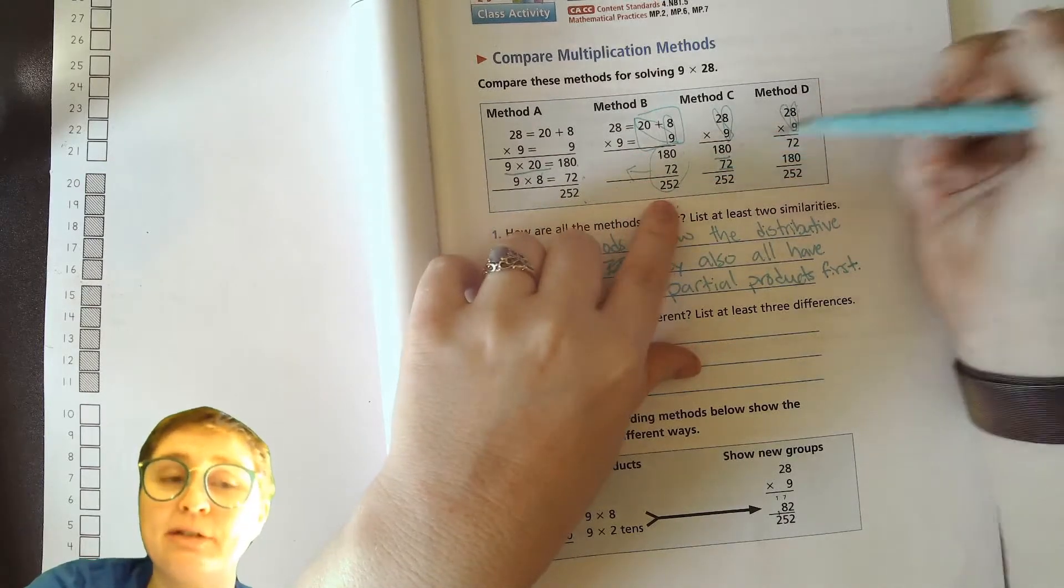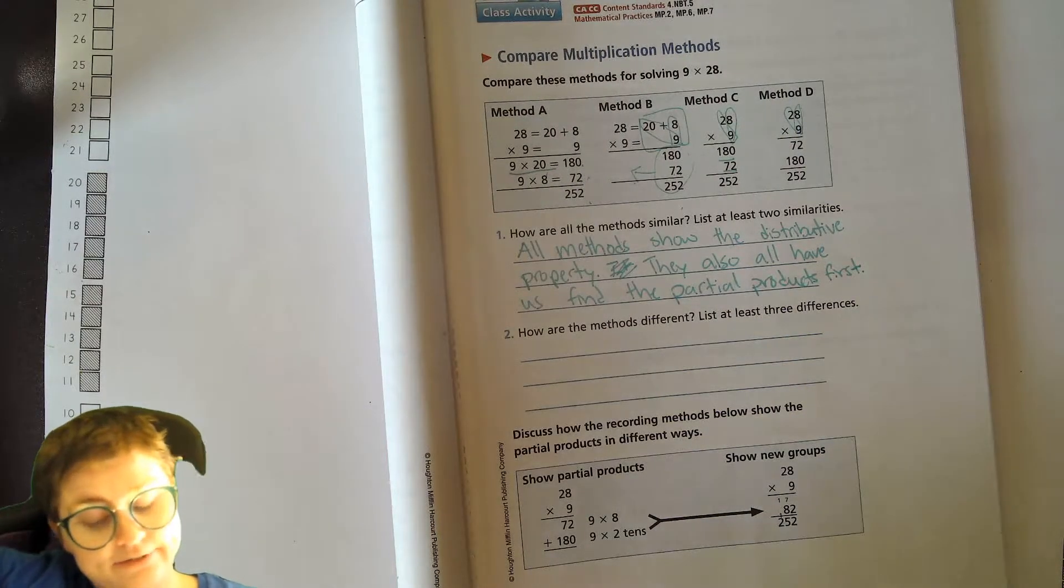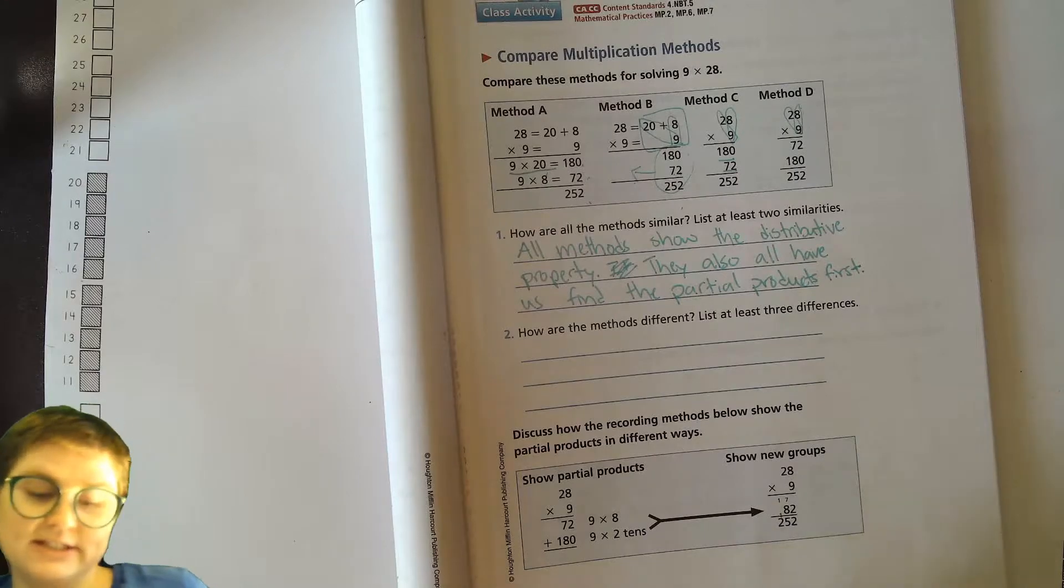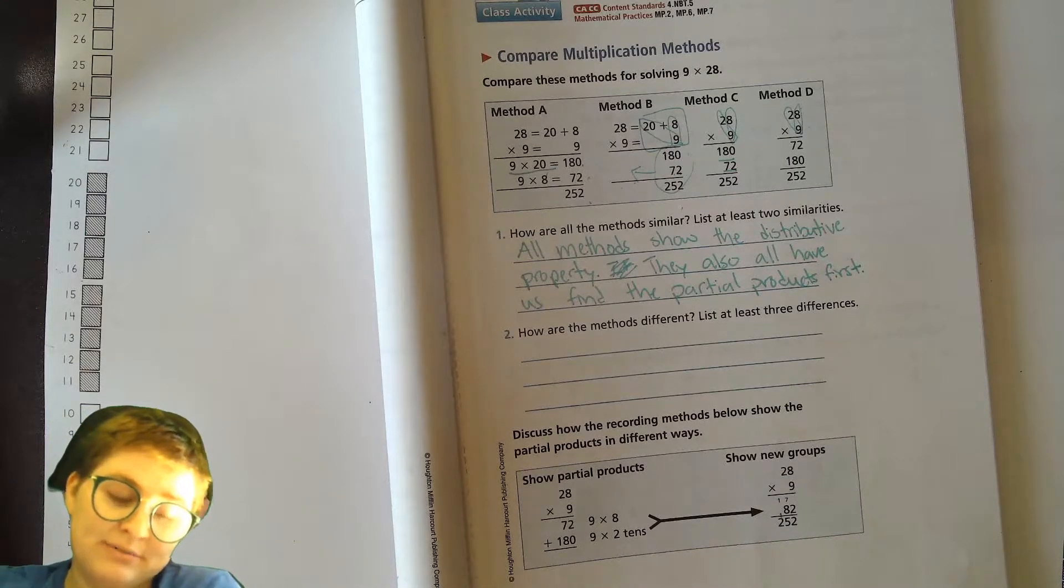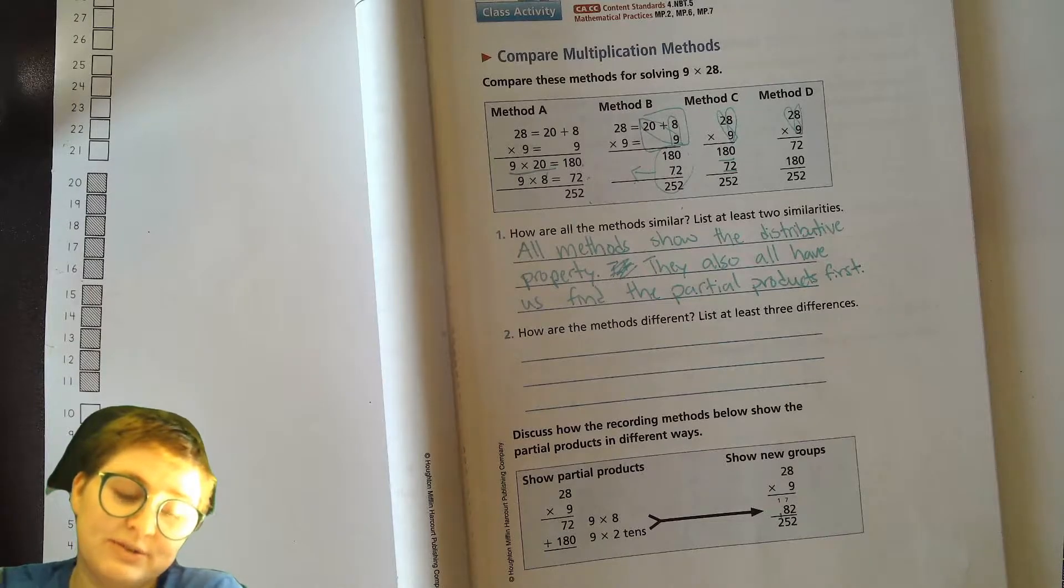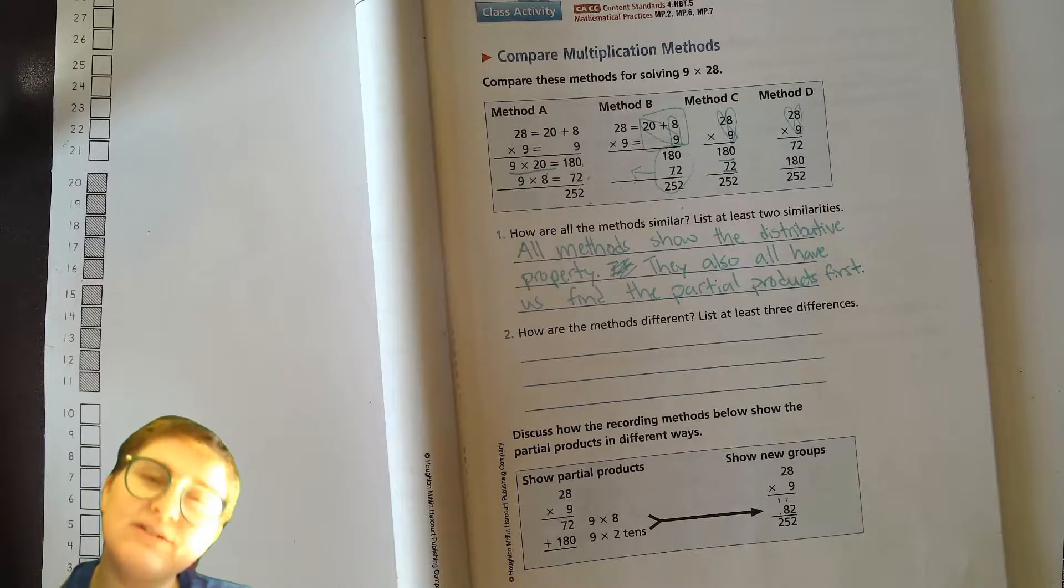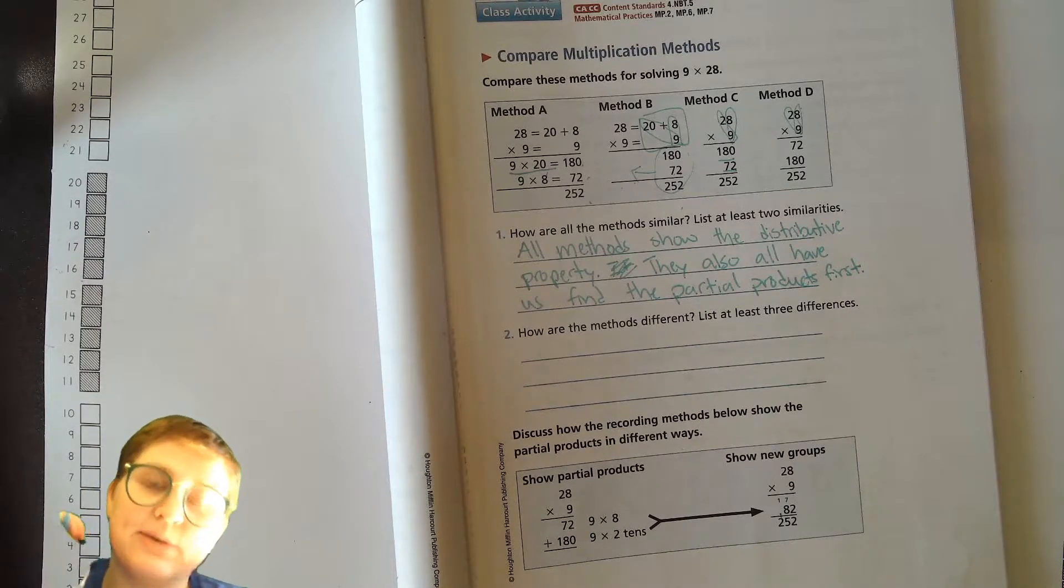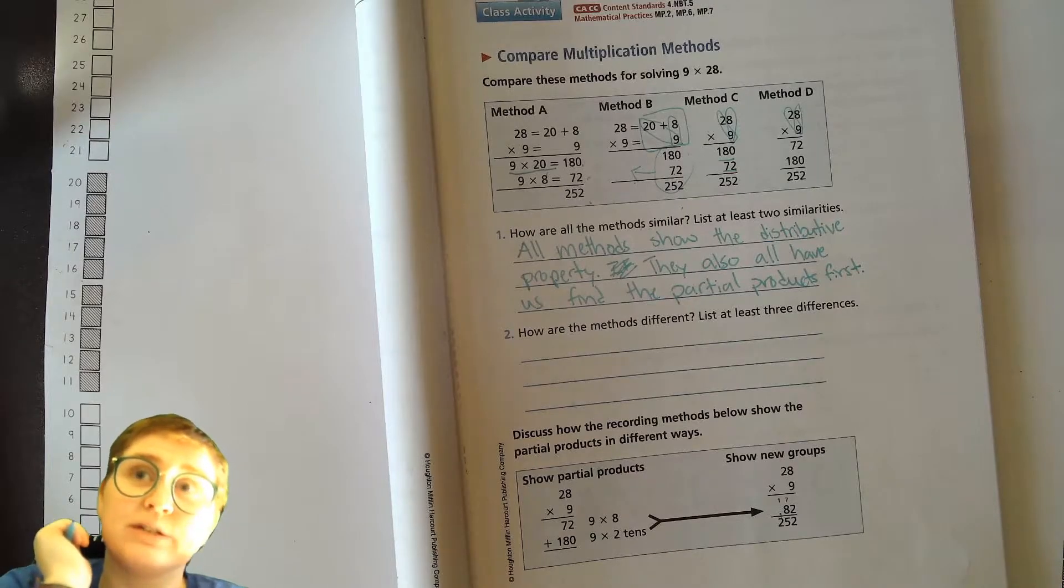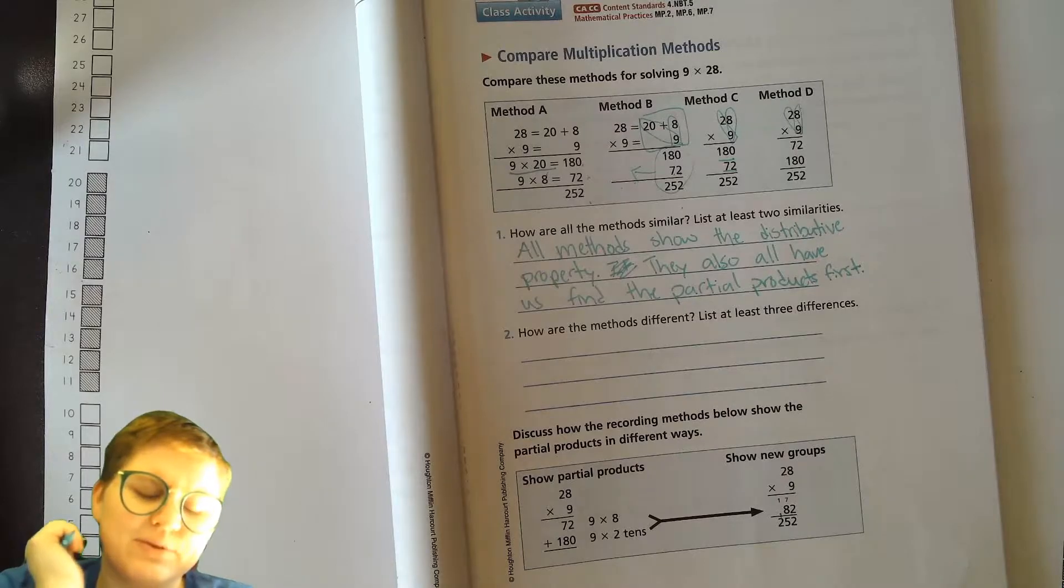Multiplying to each piece. They also all have us find the partial products first. Okay, and when we talk about the partial products, those are the 180 and 72 in this case that then we add up to find the complete full product, right? Okay, now how are all these methods different? List three differences, or at least three differences. So I want you to think about what's going on, and if you want to, you can use superlatives to describe. So you can say which one is the widest, which one is more narrow or the narrowest, if you want to describe it like that. Hit pause if you want to write, hit play when you're ready.